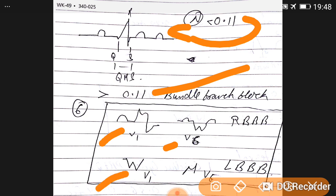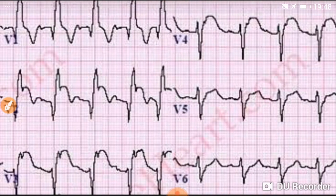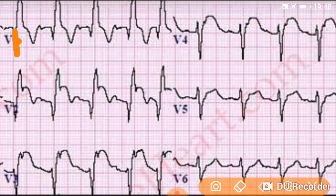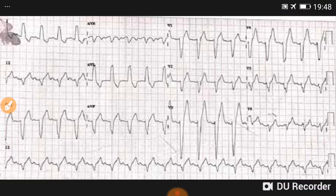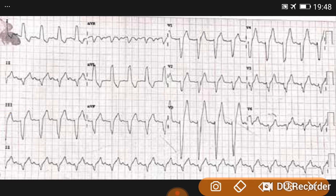In V1 W wave and V6 M wave, it is left bundle branch block. Let's see the example. V1 here, this is M wave, and W wave in V6, so it's right bundle branch block. Now this is left bundle branch block: W wave in V1, and M wave in V6 or V4 we can say.